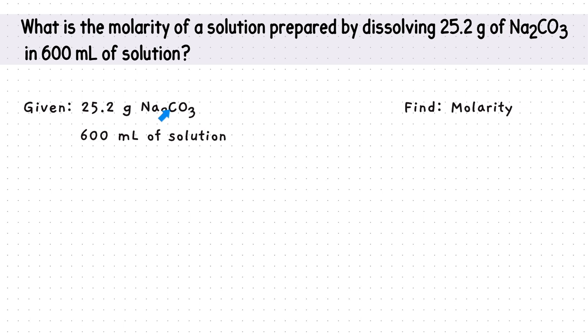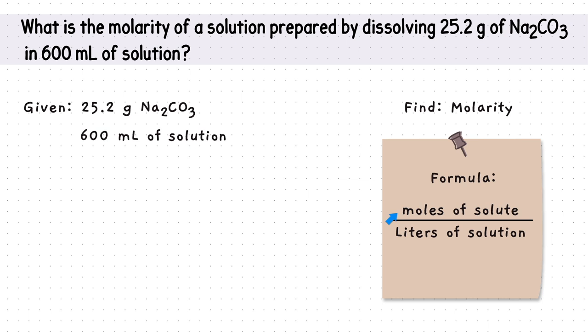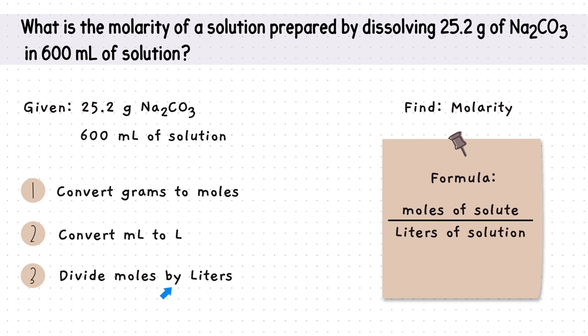We're given the mass of sodium carbonate and the volume of the solution. We're asked to find the molarity of the solution. Recall our molarity formula is in moles, not grams, and in liters, not in milliliters. So, we will need to convert the grams to moles first, then convert the milliliters to liters. And the last step is to divide the moles and liters together to get the molarity.